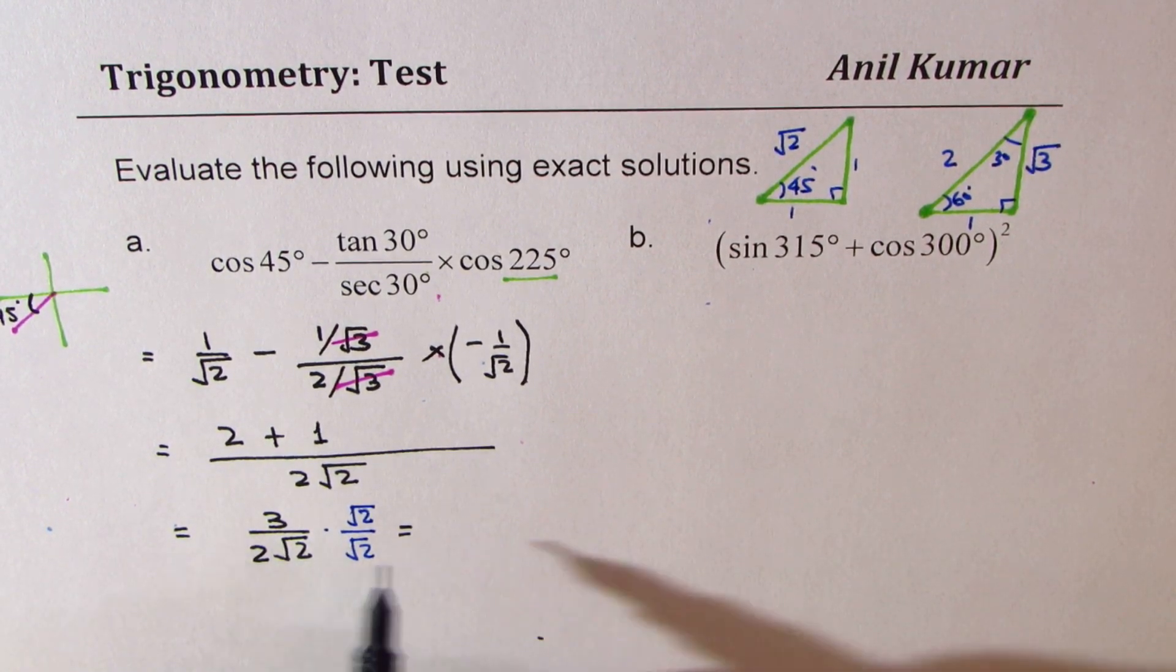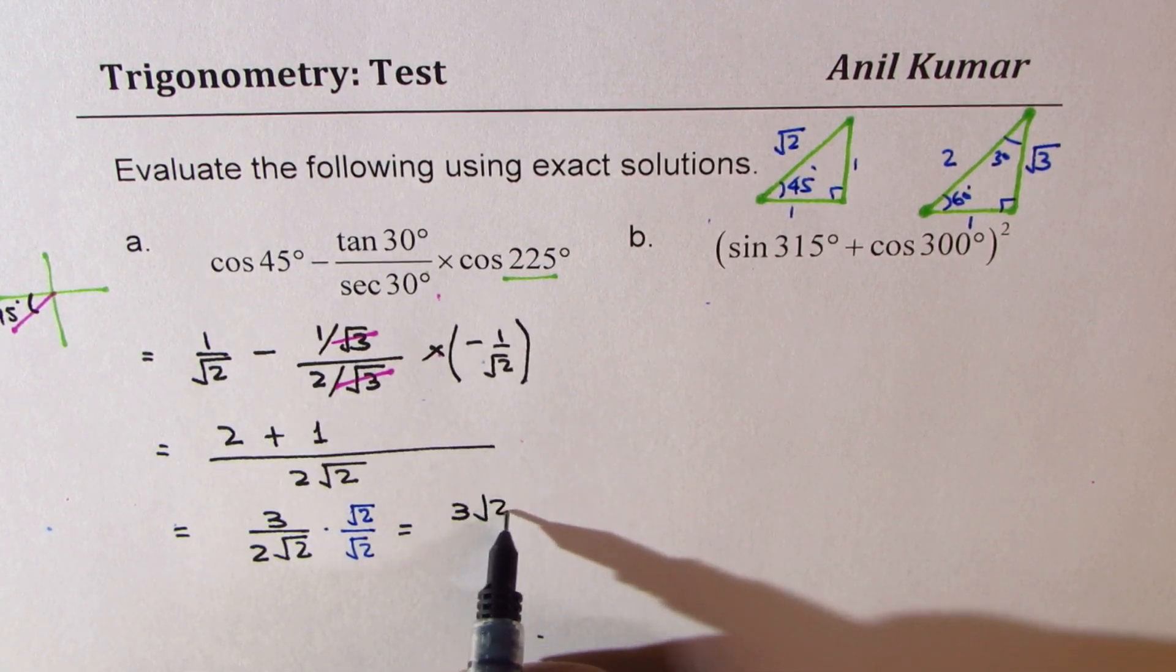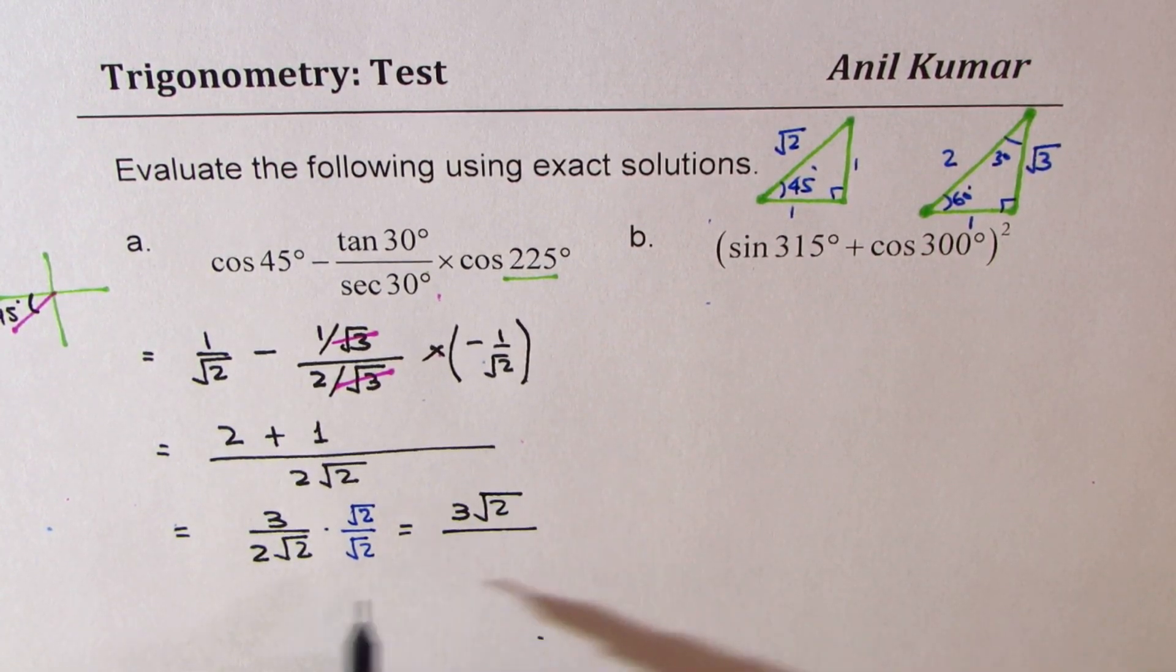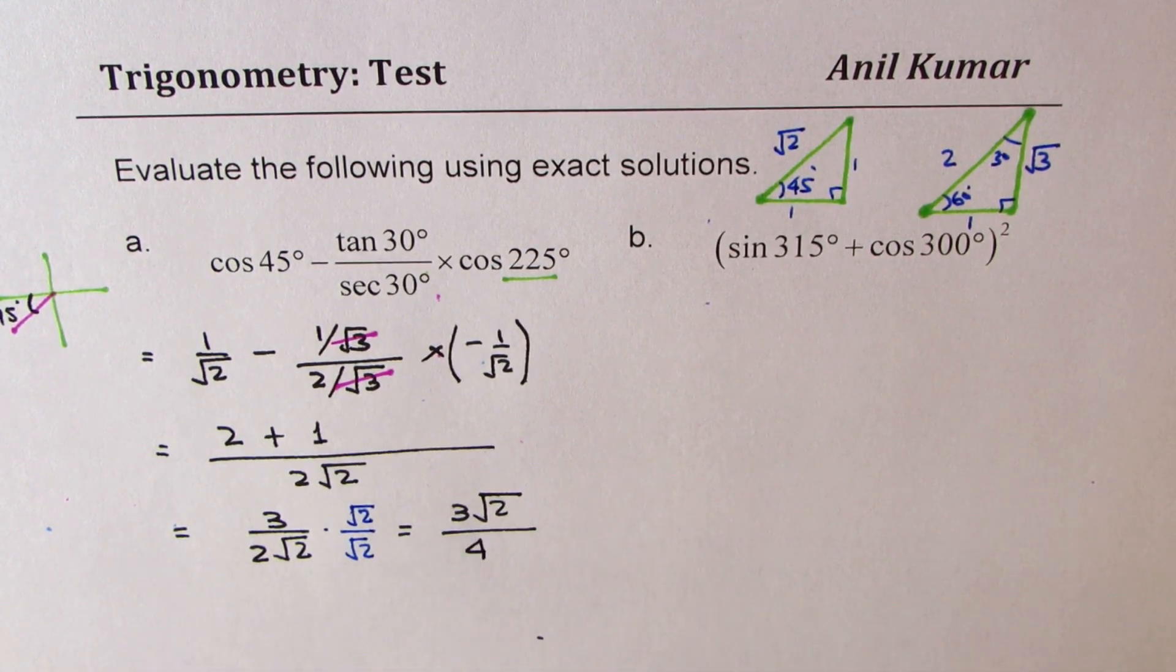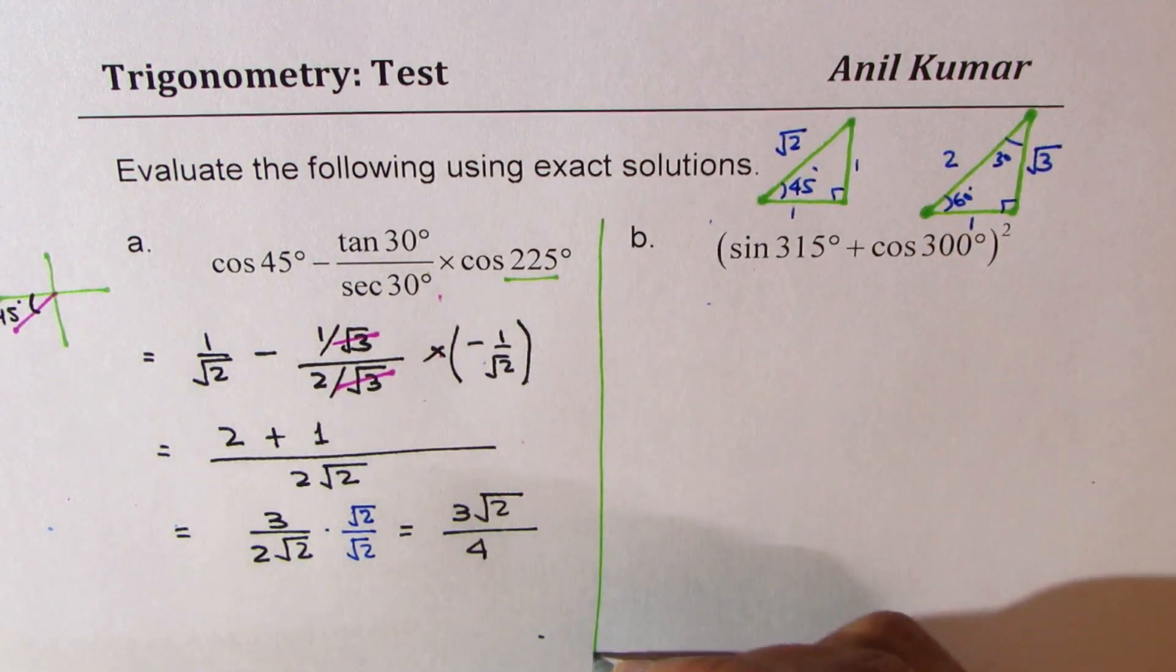Now we can write this as 3 square root 2 over square root 2 times square root 2 is 2, and 2 times 2 is 4. So that is the value for the given trigonometric expression.